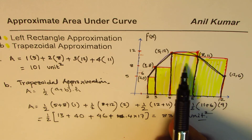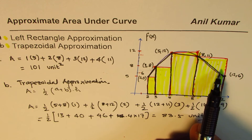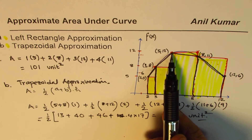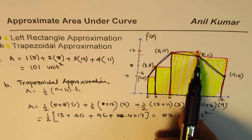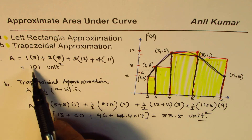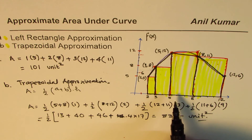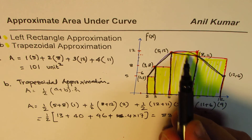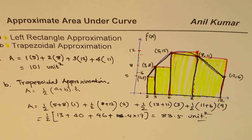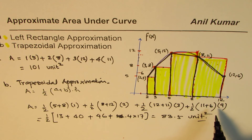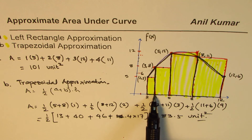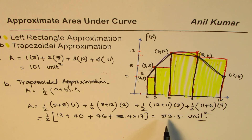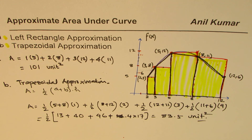The idea is that you can use different methods to find area under the curve. Left rectangle gives a fairly good approximation in this particular example, and trapezoids are very close for most of the part. You could also use right rectangle approximation and center value approximation. Remember that in a test, sometimes you may get questions where these intervals are not constant — that's what I want to emphasize. I'm Anil Kumar, and I hope that helps. Thank you and all the best.